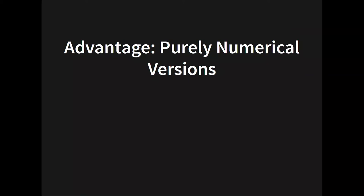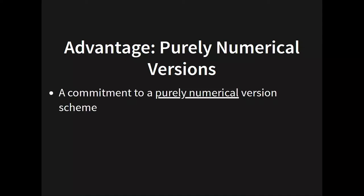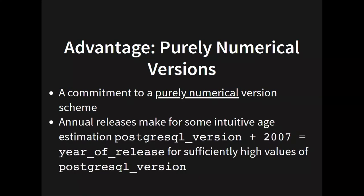We have always had purely numerical version names. Now it's even better — we're not doing dot releases. As the number of versions accumulates, you can start to get the notion that if you take the Postgres version number you're looking at and add 2007 to it, you get the year that version came out. Will we hold to this? I don't know, but it's going to be a pretty good approximation for a long time.